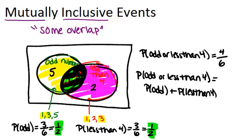We're going to subtract the center part, which is the probability that it's both odd and less than 4, because that's where they overlap, so minus the probability that it's odd and less than 4.